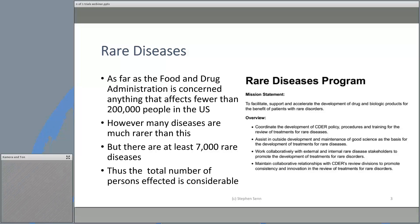The Food and Drug Administration has a definition of a rare disease: one affecting fewer than 200,000 people in the U.S. I'm going to be talking about the use of N of 1 trials when we have very few patients, but also when we are going to personalize treatments. From one point of view, as soon as we start talking about personalizing treatments, we're talking about rare diseases in the sense that each individual patient has their own personal condition which might require personal treatment, so there is some link between the two. Nevertheless, there are slightly different attitudes in the way we analyze a trial depending on which particular objective we're trying to reach.